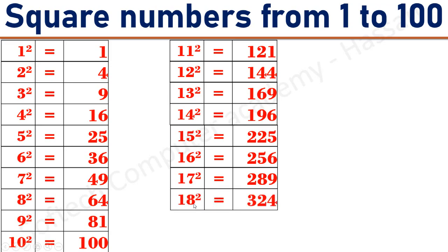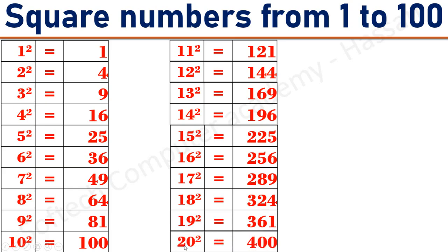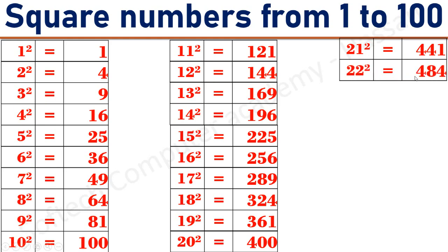18 square equals 324. 19 square equals 361. 20 square equals 400. 21 square equals 441. 22 square equals 484.